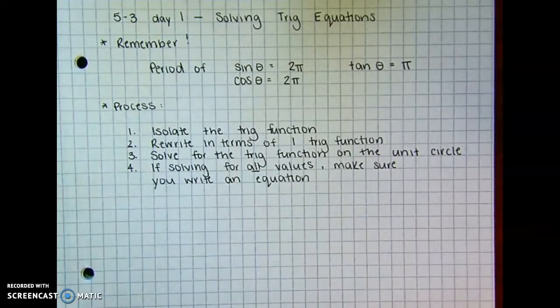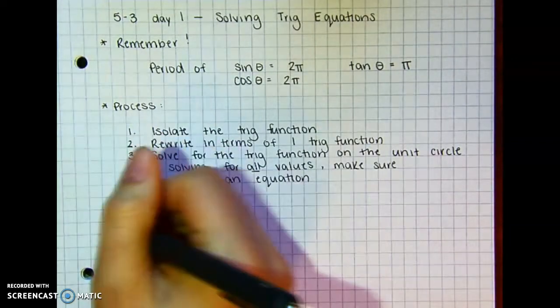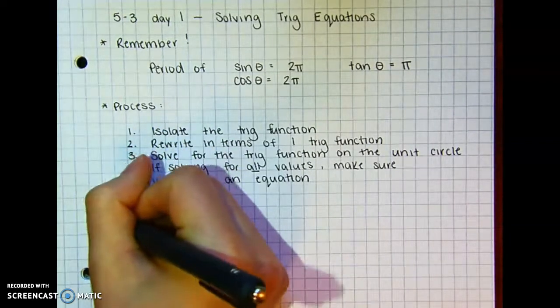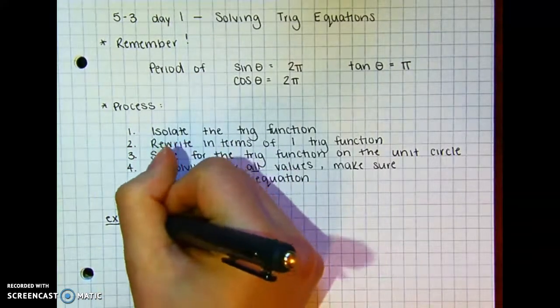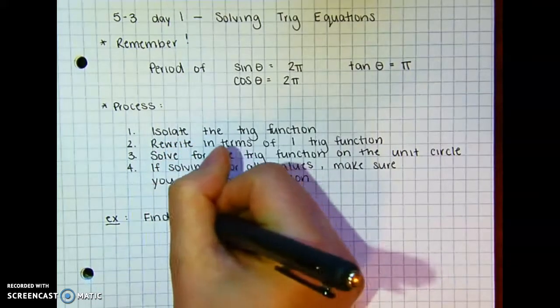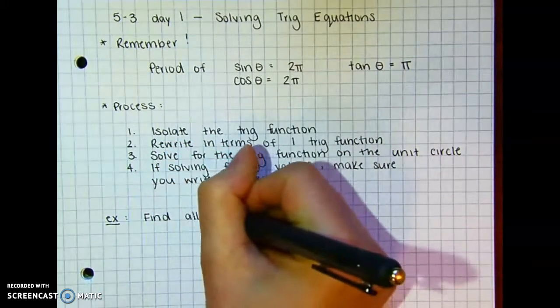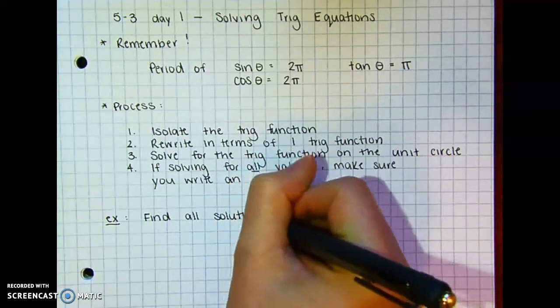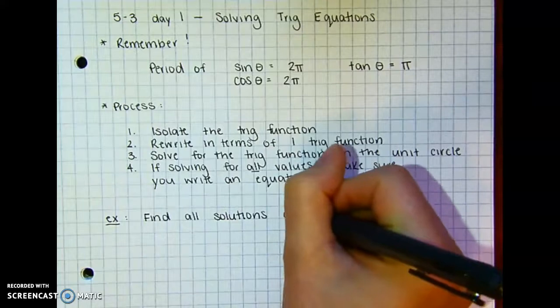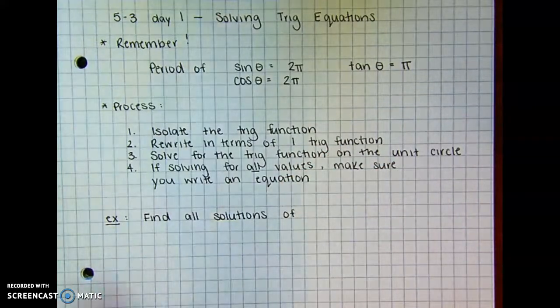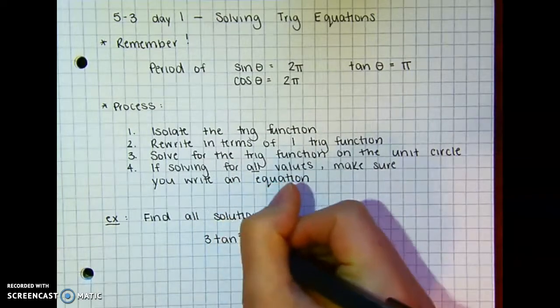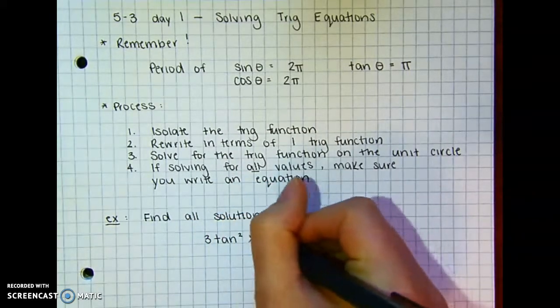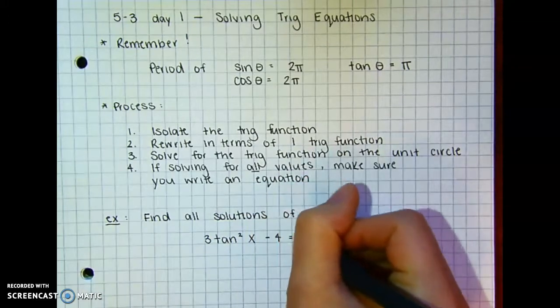Let's do an example of it and then I'll talk about what I mean. So here's the example I'd like us to do. We're going to solve or find all solutions of 3 tangent squared of x minus 4 equals negative 3.